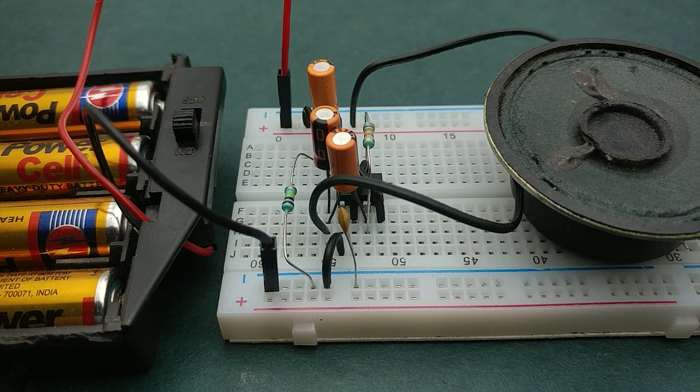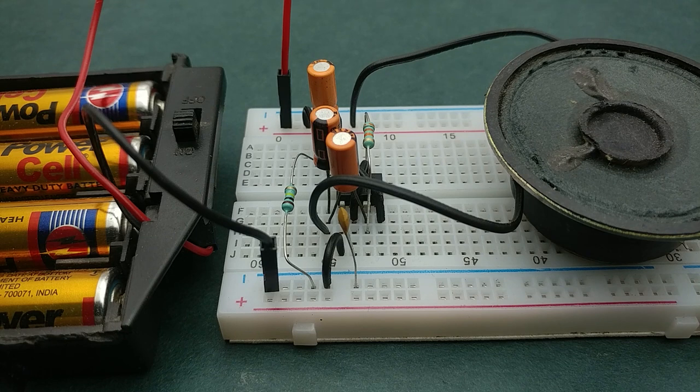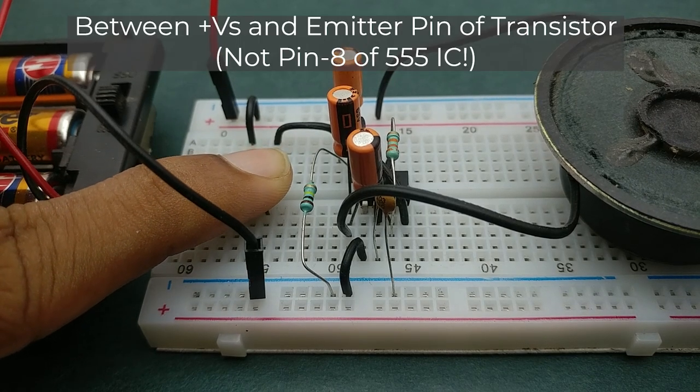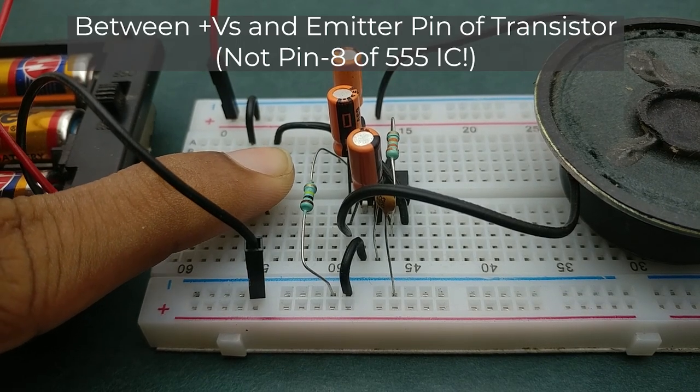It will be much better if the machine gun sound is generated only when an external trigger is applied and in order to achieve that we can add a push button switch between the positive power supply and pin 8 of the triple fire timer IC.